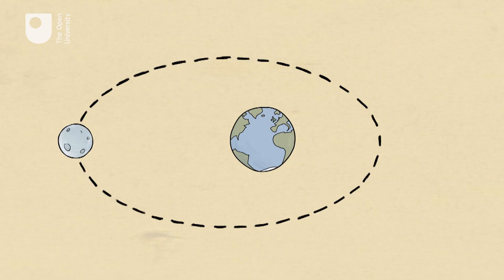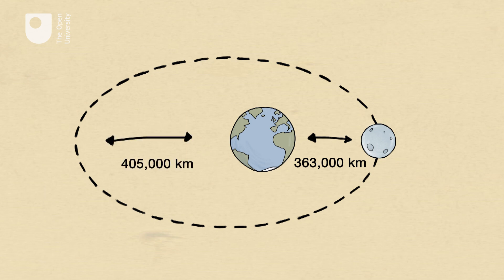The fact is that the Moon's orbit about the Earth is not quite circular. Its distance varies from about 363,000 kilometres to about 405,000 kilometres, and a so-called supermoon is when the closest point happens to coincide with full moon.